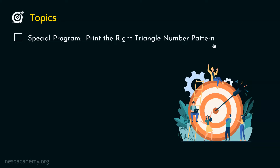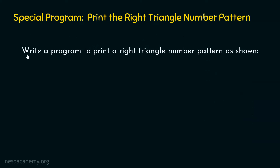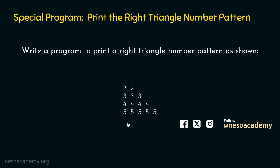We will see the right triangle number pattern in a moment. Before writing the program, we must have the understanding of the problem statement. The problem statement is: write a program to print a right triangle number pattern as shown. This is the right triangle number pattern we want to print on the screen.